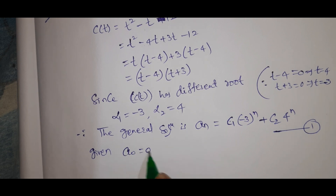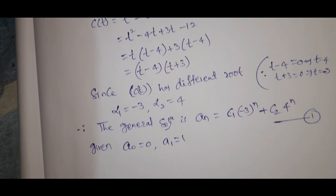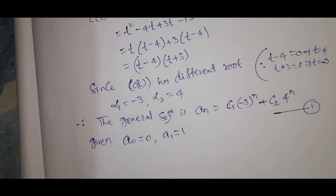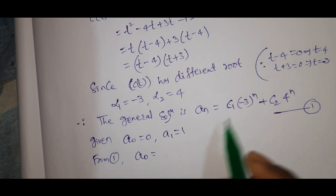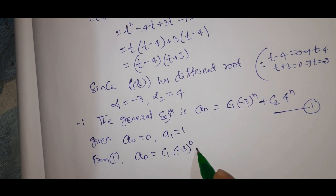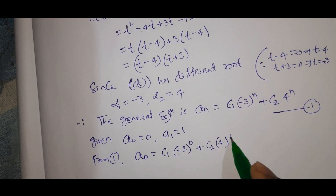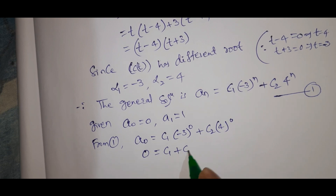Given a_0 equal to 0 and a_1 equal to 1. Substituting a_0 equal to 0 into equation 1: C1 times (minus 3) to the power of 0 plus C2 times 4 to the power of 0 equal to 0, which gives C1 plus C2 equal to 0.